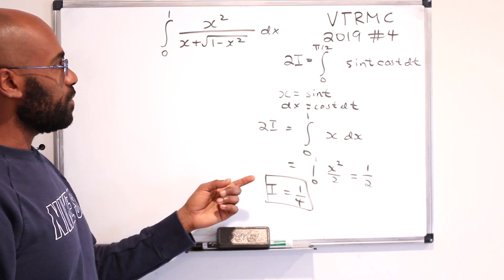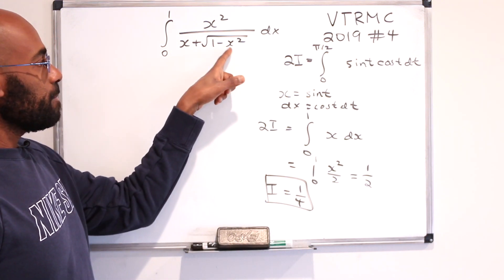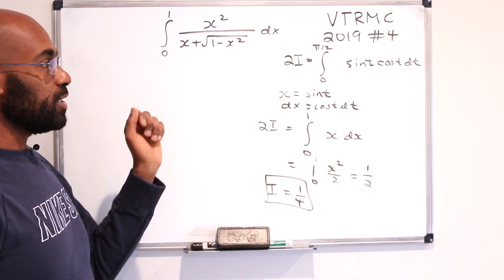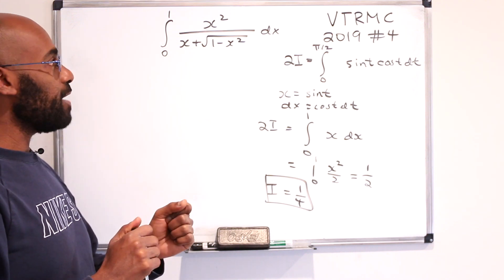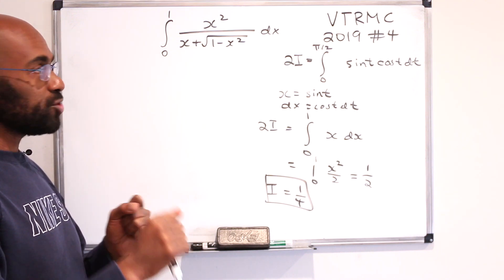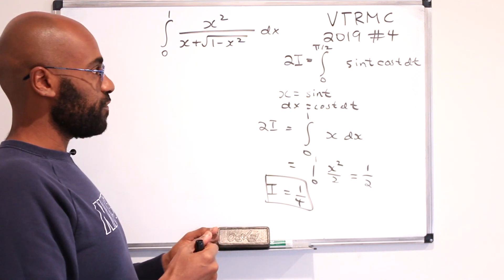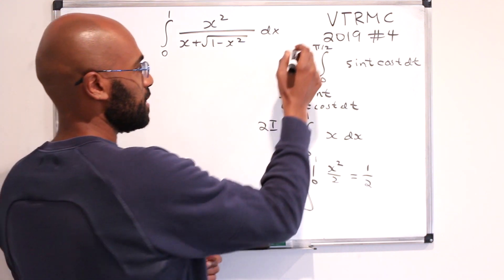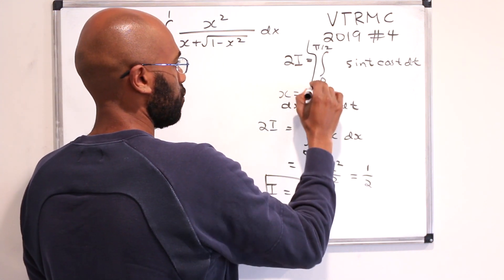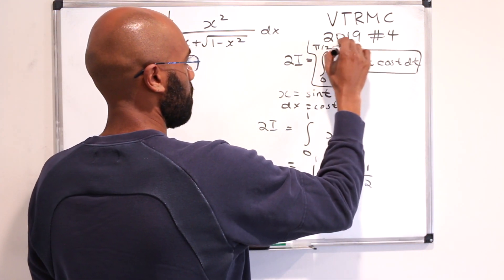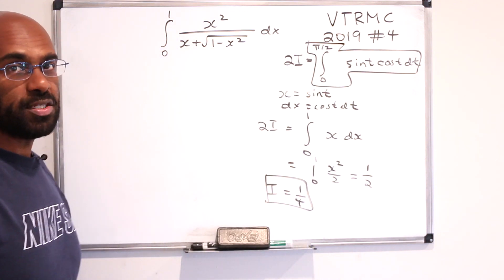So the idea was to exploit trigonometric substitution in two different ways that allowed for this nice symmetric way of representing the integral that got us to add the two different representations to get twice the integral being a much more manageable thing to integrate.